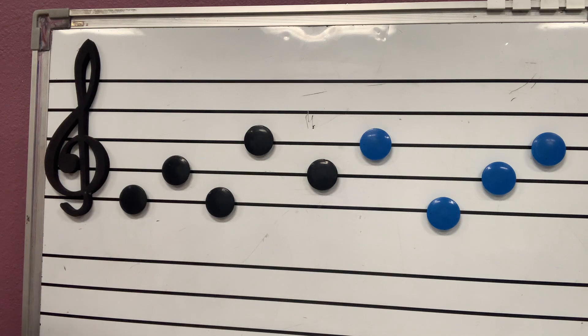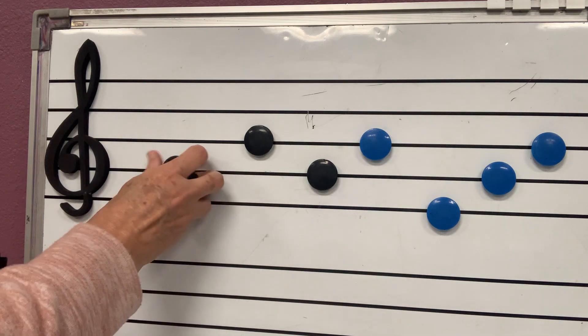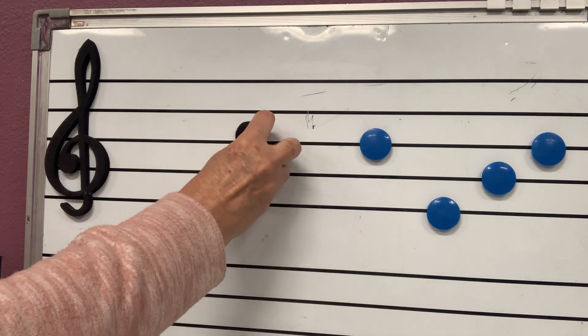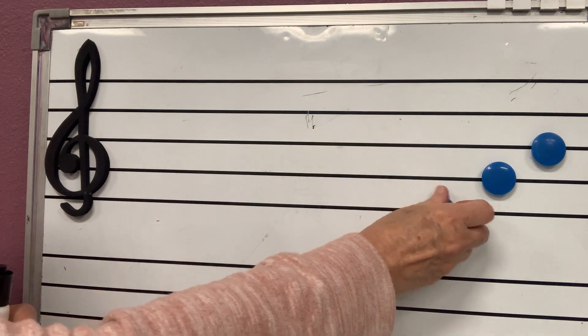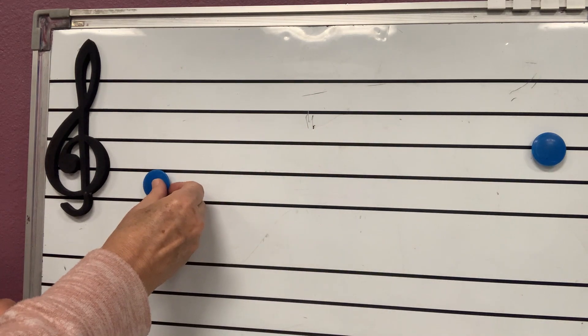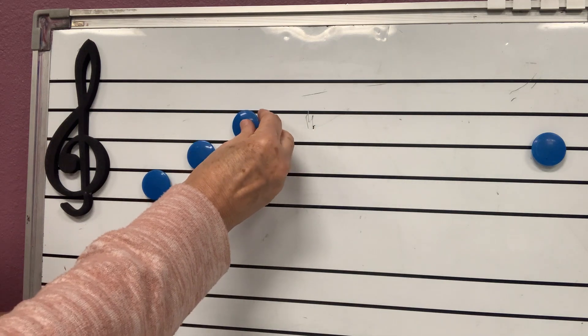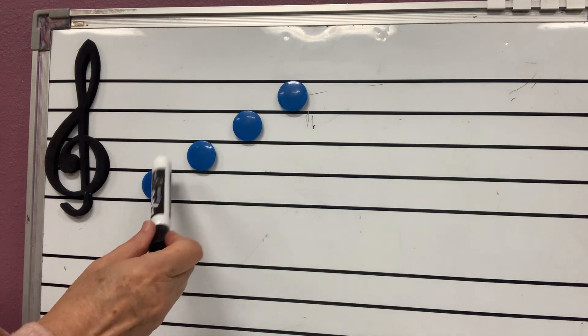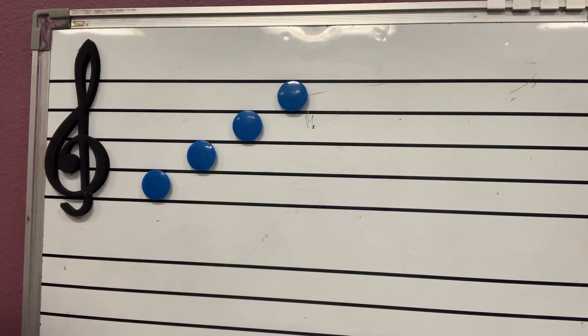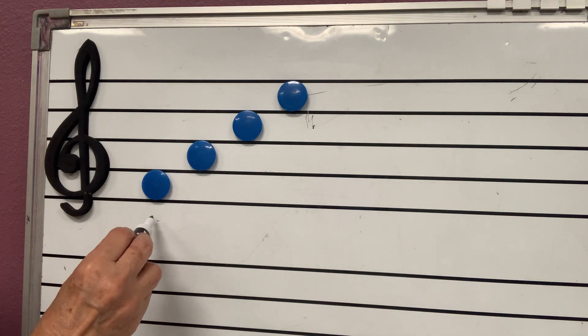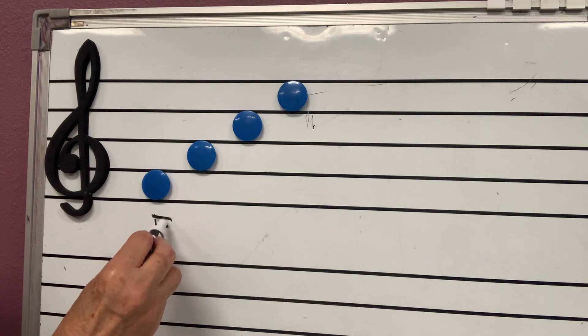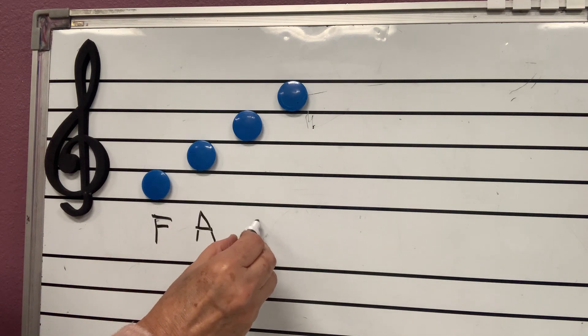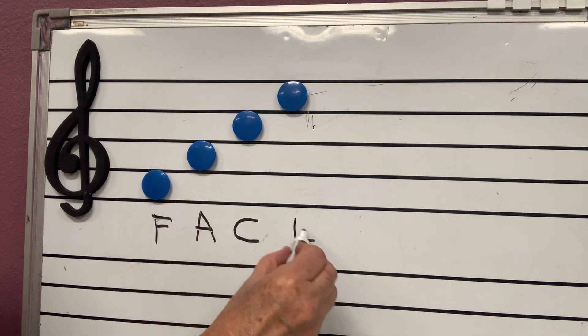E, G, B. E, G, B. Every girl bakes. But how about the spaces? How about the spaces? How many spaces do we have? Let's count them. I'm putting on the spaces only. There's one, two, three, four spaces. The spaces are really cool because they are going to spell a real word. The first space, we know the first space is F. The second space is A. This is going to be C and this is going to be E.